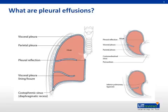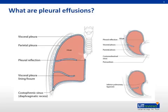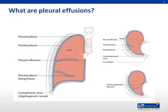To really understand what and where pleural effusions are, first we need to do a quick review of anatomy. The lungs and mediastinum are contained within the thoracic cavity, which is bordered on the outside by the rib cage. The rib cage and lungs are separated by a thin, continuous membrane called the pleura, which is divided conceptually into the visceral pleura, which lines the lungs, and the parietal pleura, which lines the rib cage. The area inside the visceral and parietal pleura is termed the pleural space.